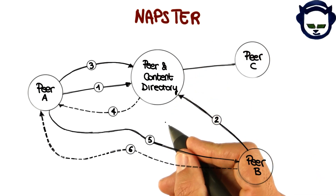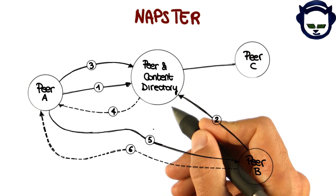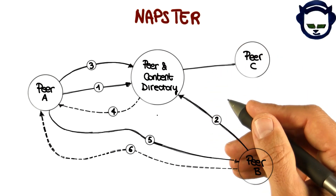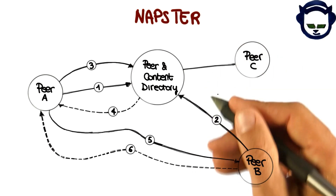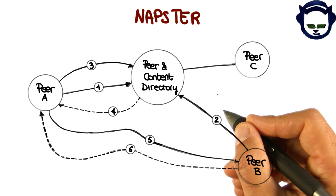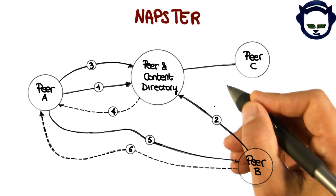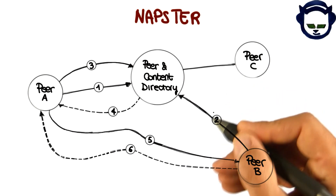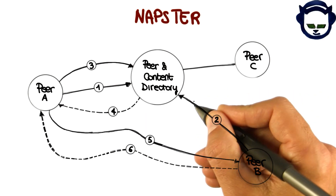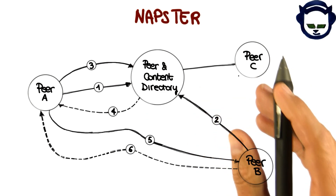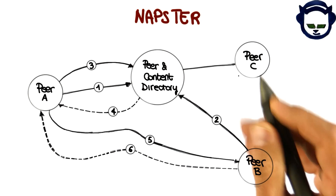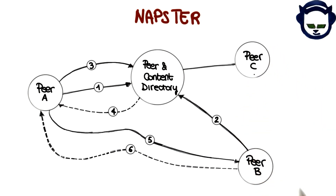Looking at the system from an architectural style perspective, we can see that Napster was a hybrid architecture with both client-server and peer-to-peer elements. Something I would like to stress is that this is not at all uncommon — in real-world non-trivial architectures, it is very common to see multiple styles used in the same system. The next system we will consider, Skype, is instead an example of a well-designed, almost purely peer-to-peer system.